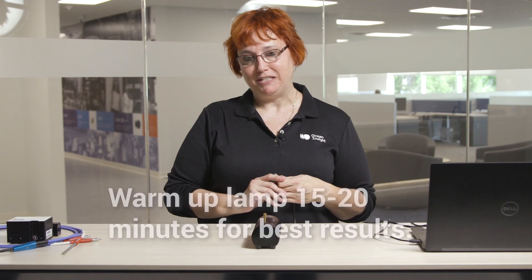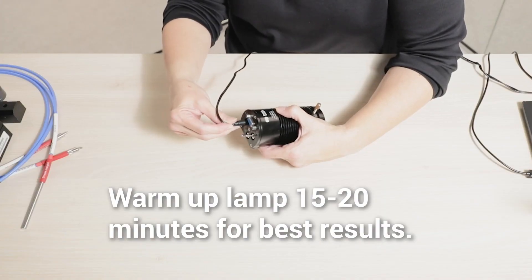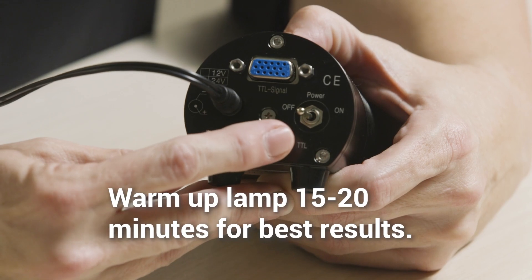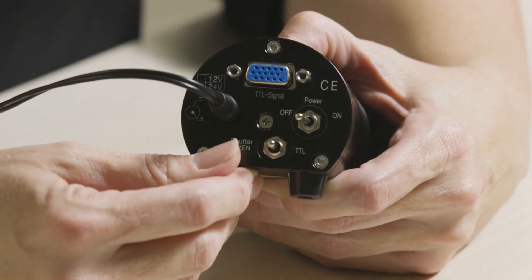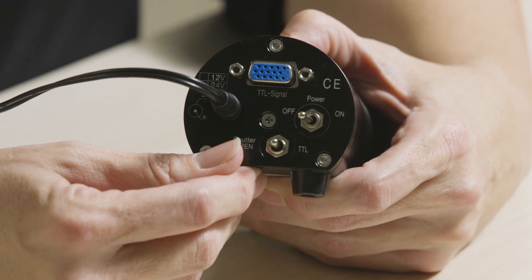The first step in our setup is going to be to plug in and get our light source ready for our reflectance measurements. So first, we're going to plug in. We've got a shutter, which will enable us to take our dark measurement without turning the light source off.